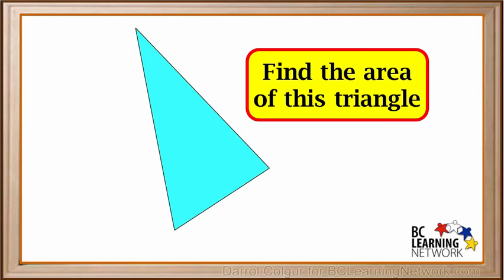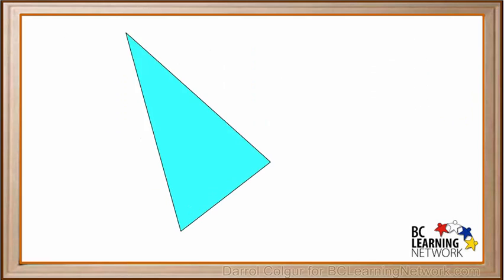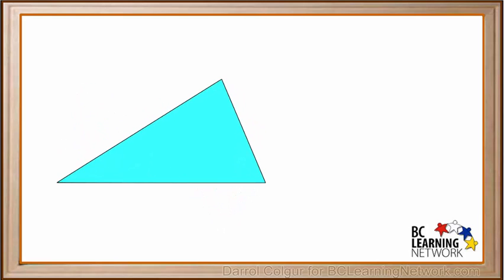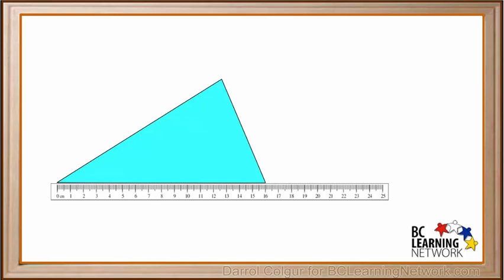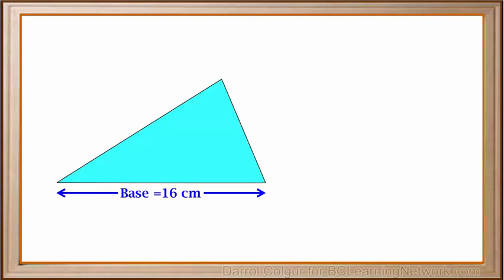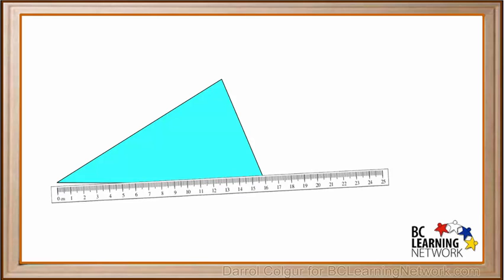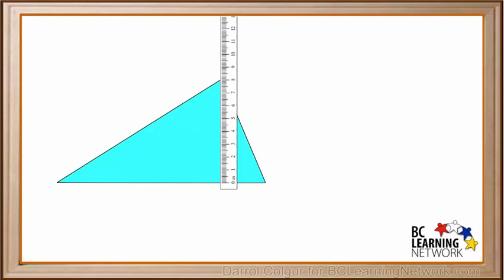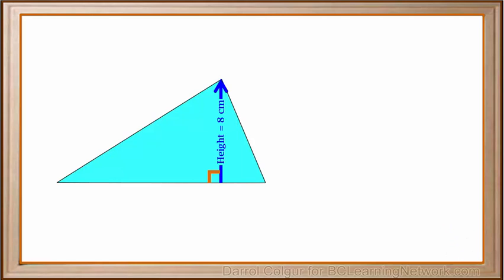We're asked to find the area of this blue triangle. We'll move it so the largest side is on the bottom. We'll use a ruler to measure the length of the base — we see it's 16 centimeters long, so we'll mark the base as 16 centimeters. Now we'll use the same ruler to measure the height — we see that it's 8 centimeters, so we'll note the height is 8 centimeters.